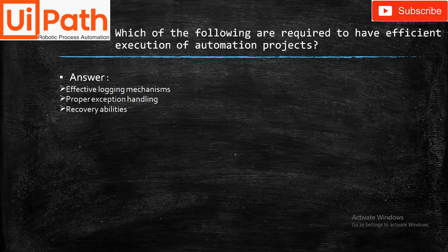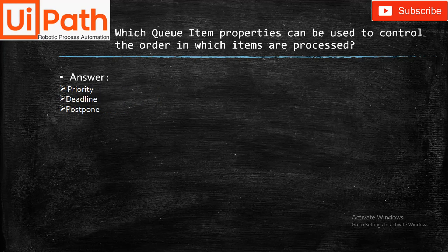Which of the following are required to have efficient execution of an automation project? An effective logging mechanism, proper exception handling, and recovery abilities are required. Which queue item properties can be used to control the order in which items are processed? Priority, Deadline, and Postpone will be used.